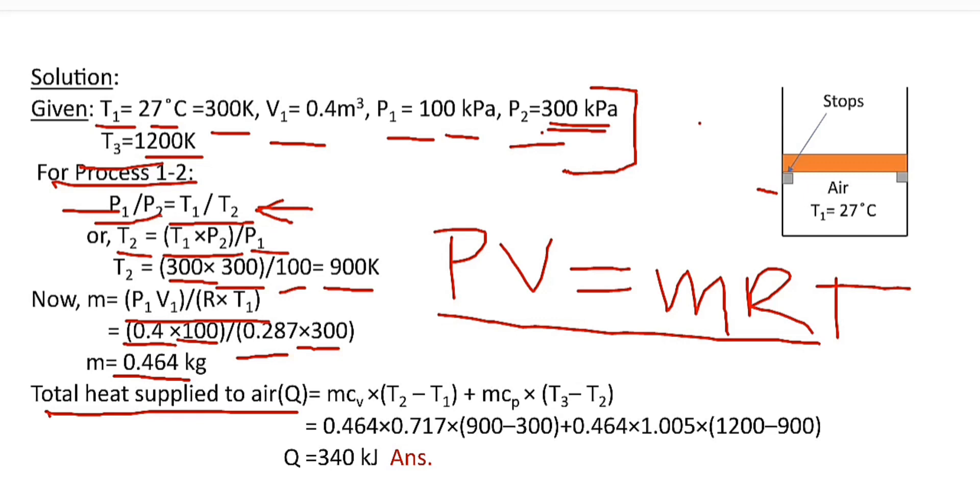Now, total heat transferred to the air is equal to the sum of heat transfer during process 1 to 2 and heat transfer during process 2 to 3. Heat transfer during process 1 to 2 is equal to m Cv times T2 minus T1, and during process 2 to 3 is equal to m Cp times T3 minus T2. Here Cv is the specific heat of air at constant volume and its value is 0.717, and Cp is the specific heat of air at constant pressure and it is equal to 1.005.